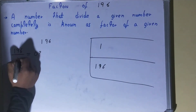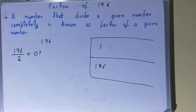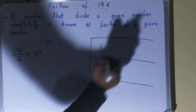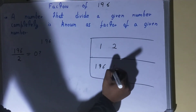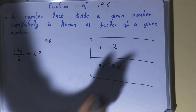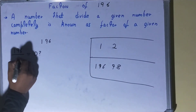After one, we try the next lowest natural number, which is two. Can we divide 196 by two? Yes, because 196 is an even number and all even numbers are completely divisible by two. So two is a factor. Two times 98 equals 196, so 98 is also a factor.